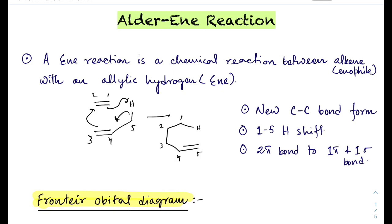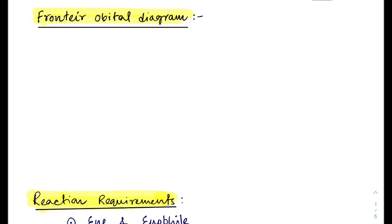Generally there is a 1,5-hydrogen shift, with formation of a new C-C bond at C2-C3. There is a new carbon-carbon bond formed, and two pi bonds before the reaction become one pi bond and one sigma bond after the reaction.